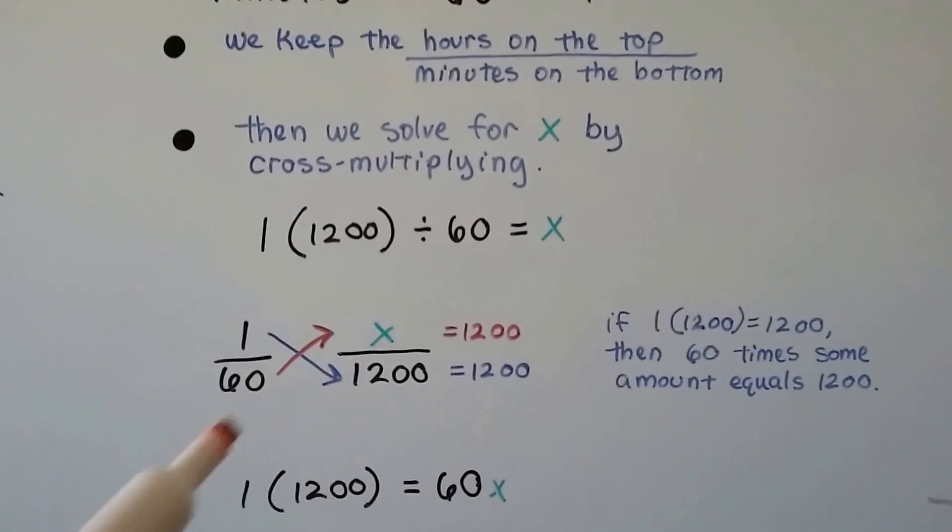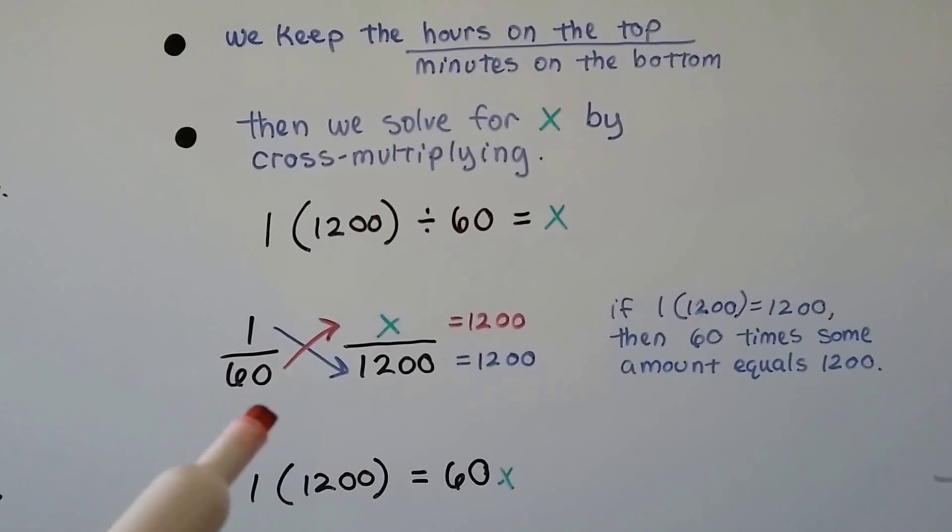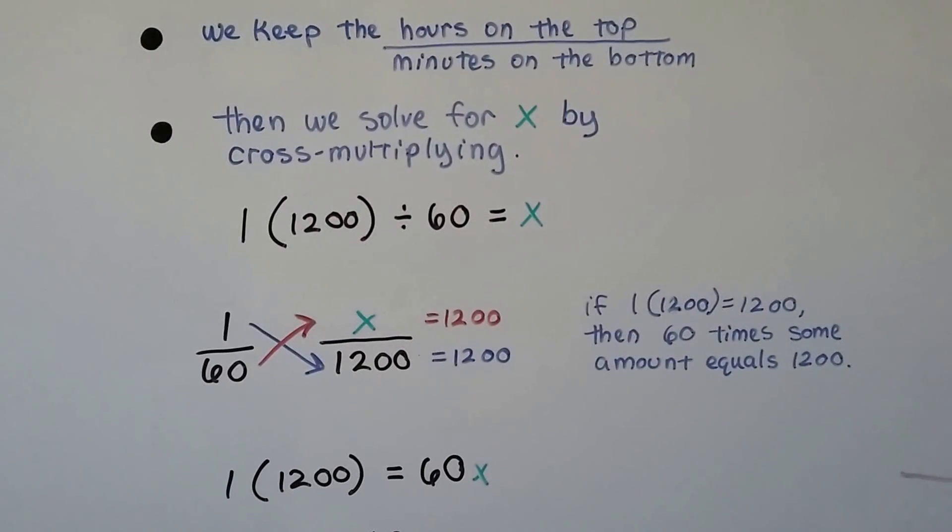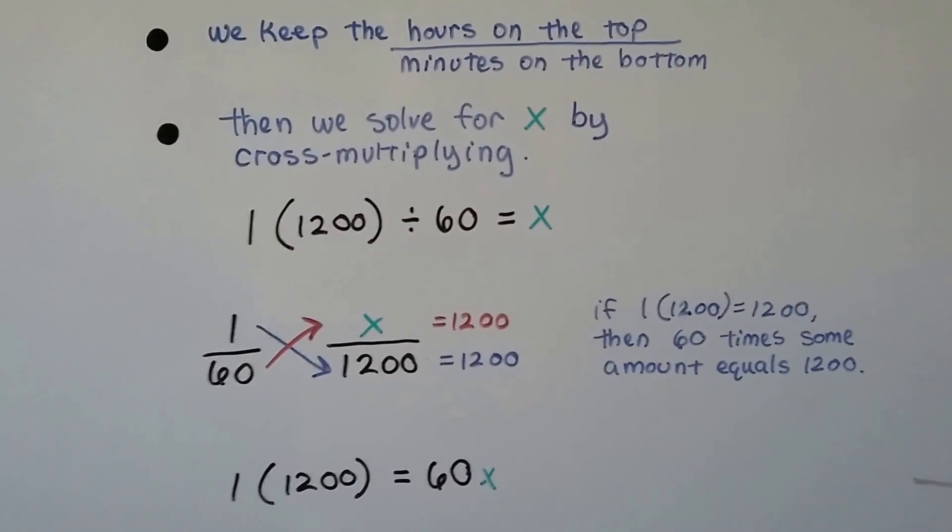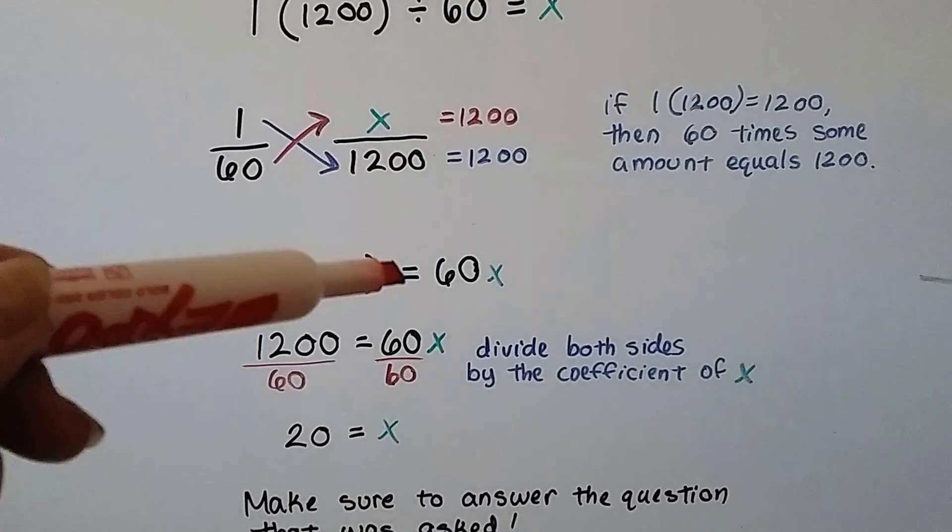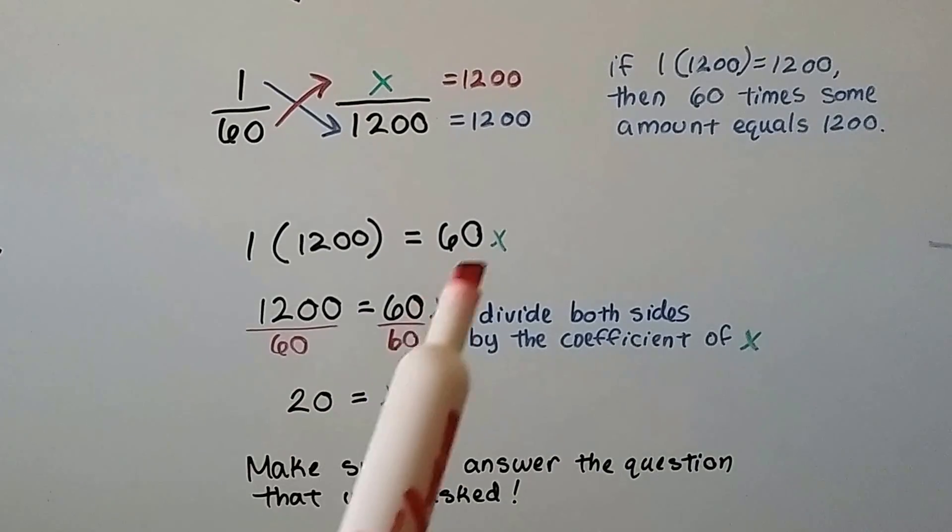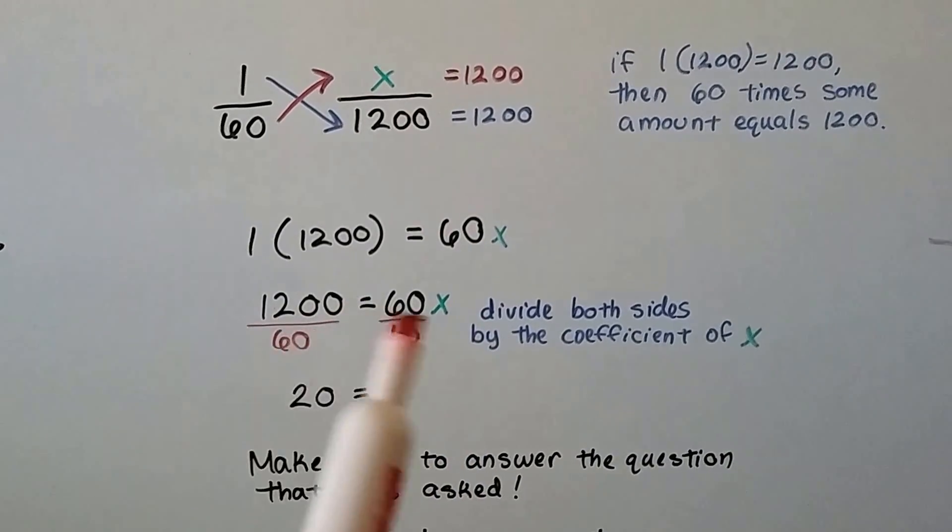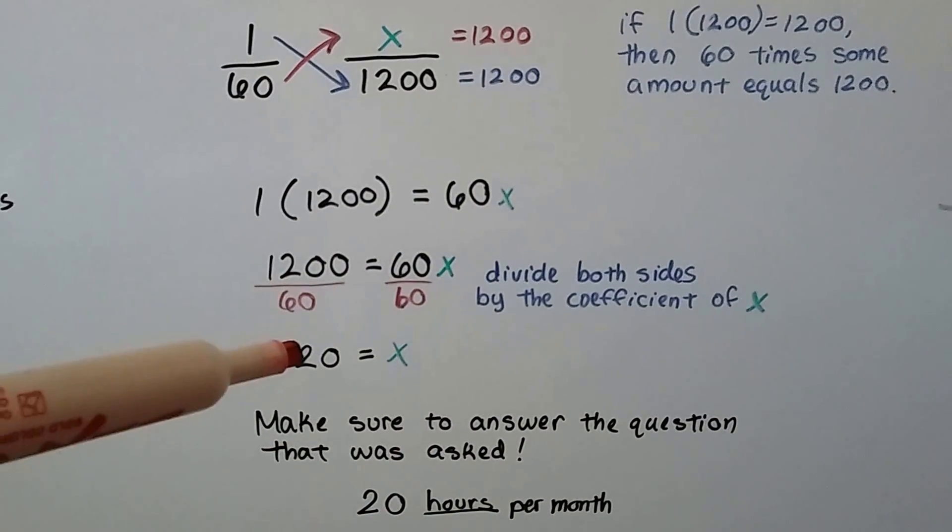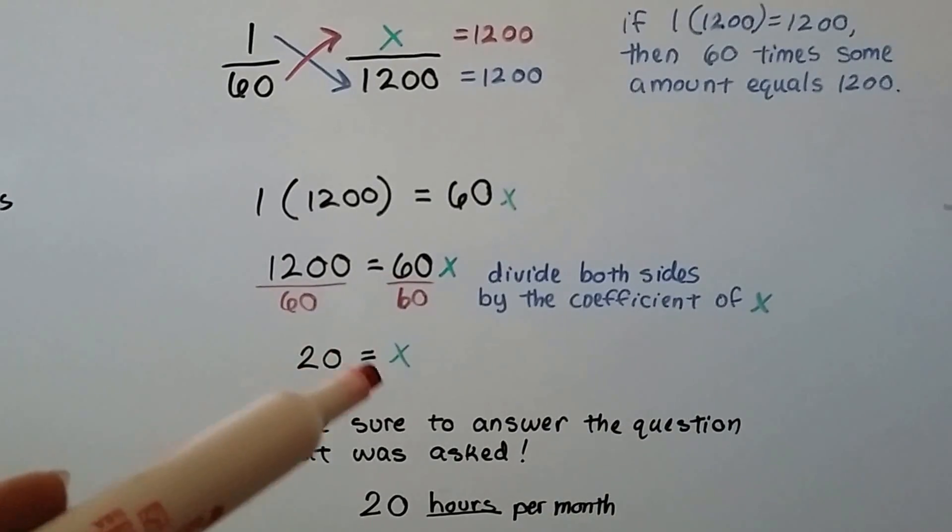If we cross-multiply, it would be 1 times 1,200 equals 1,200, and then 60 times x. That means we have 1 times 1,200 equals 60x. We could do it the algebra way, and because this is a coefficient for x, we could divide both sides by that coefficient 60. 1,200 divided by 60 is 20. 60 over 60 is 1. That gives us 20 equals x.